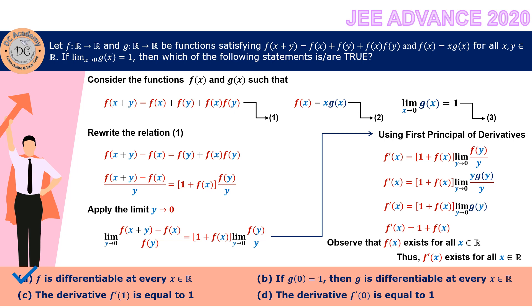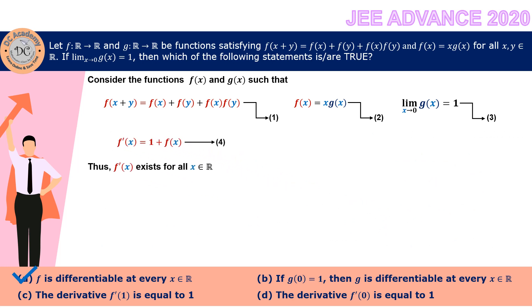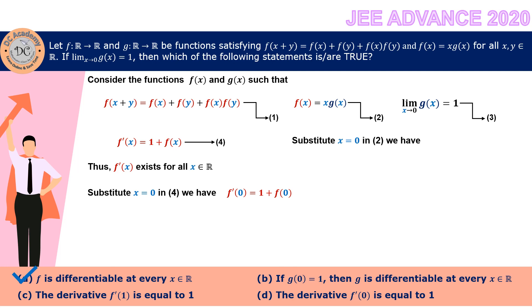Now we test option D, which says f'(0) = 1. We already have f'(x) = 1 + f(x) from relation 4. Substituting x = 0 gives f'(0) = 1 + f(0). From relation 2, substituting x = 0 gives f(0) = 0·g(0) = 0. Therefore f'(0) = 1 + 0 = 1, and option D is correct.